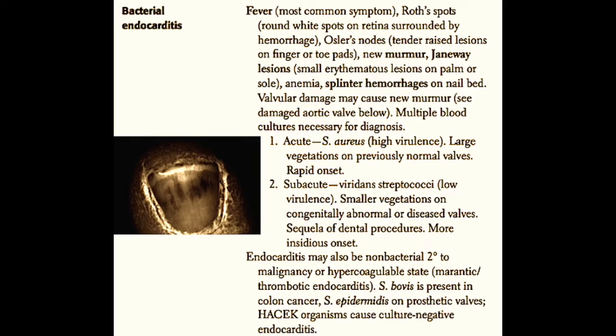These patients may also develop Roth spots, which are findings on the retina — round white spots surrounded by hemorrhage. Roth spots are generally thought to indicate some type of embolic bacterial phenomenon from the heart. They may also develop Osler's nodes, which are non-infected autoimmune tender raised lesions on the finger or toe pads.